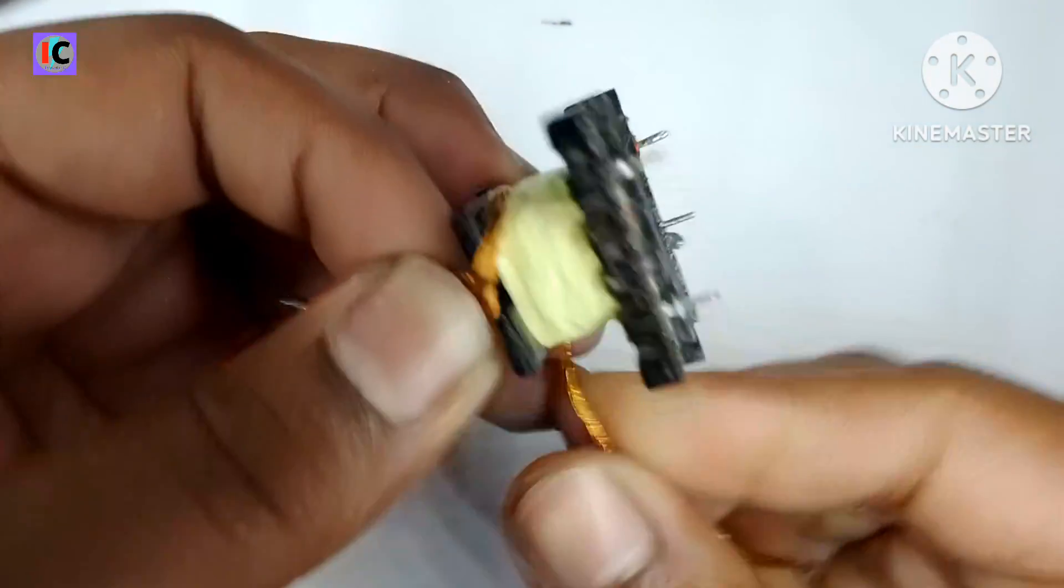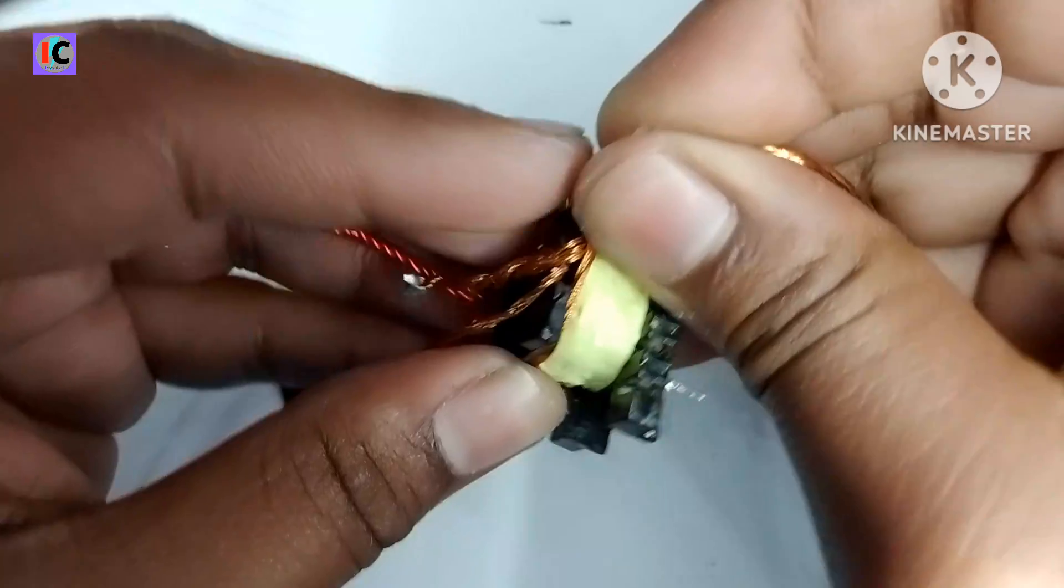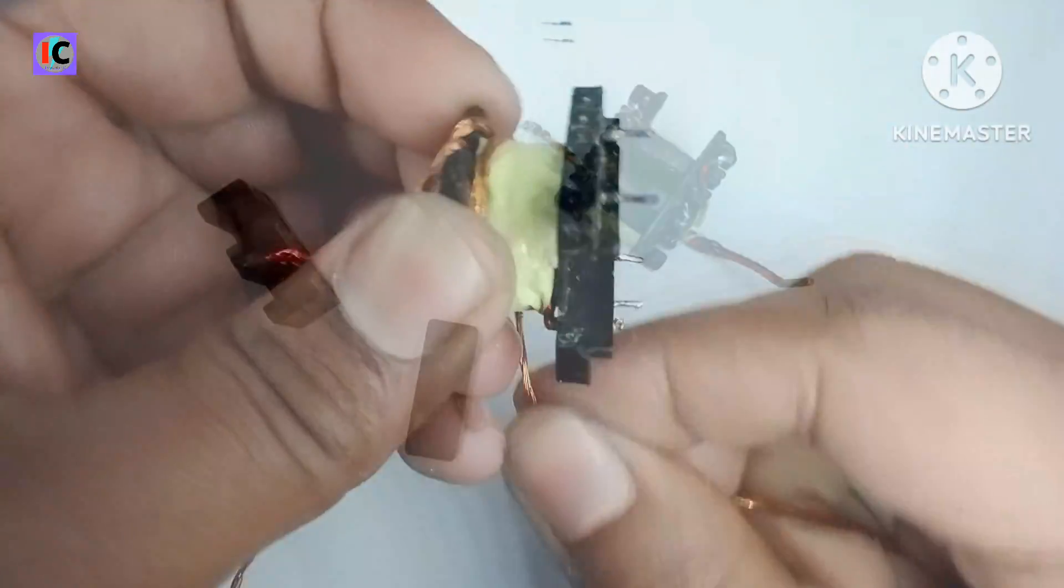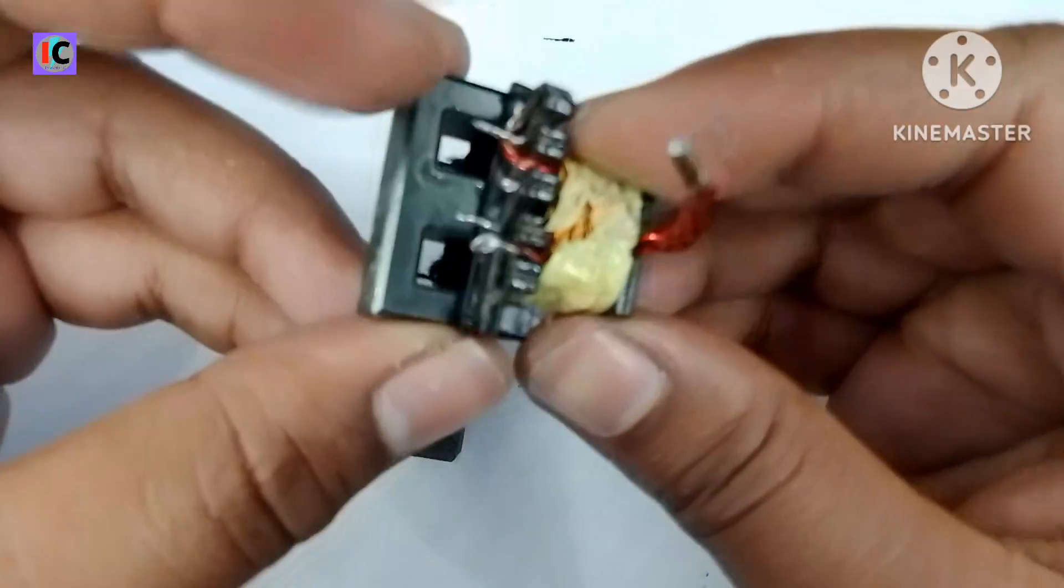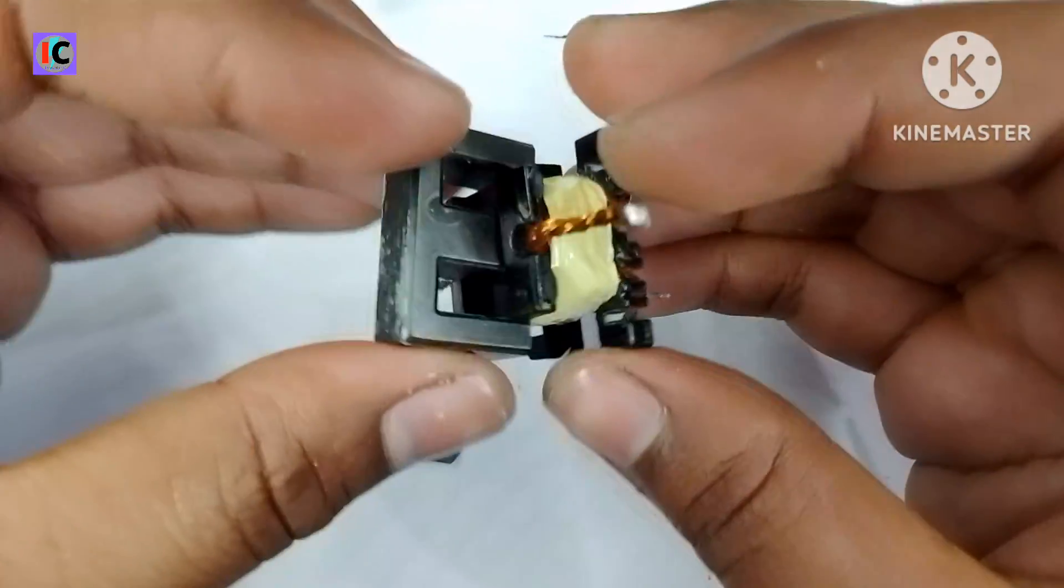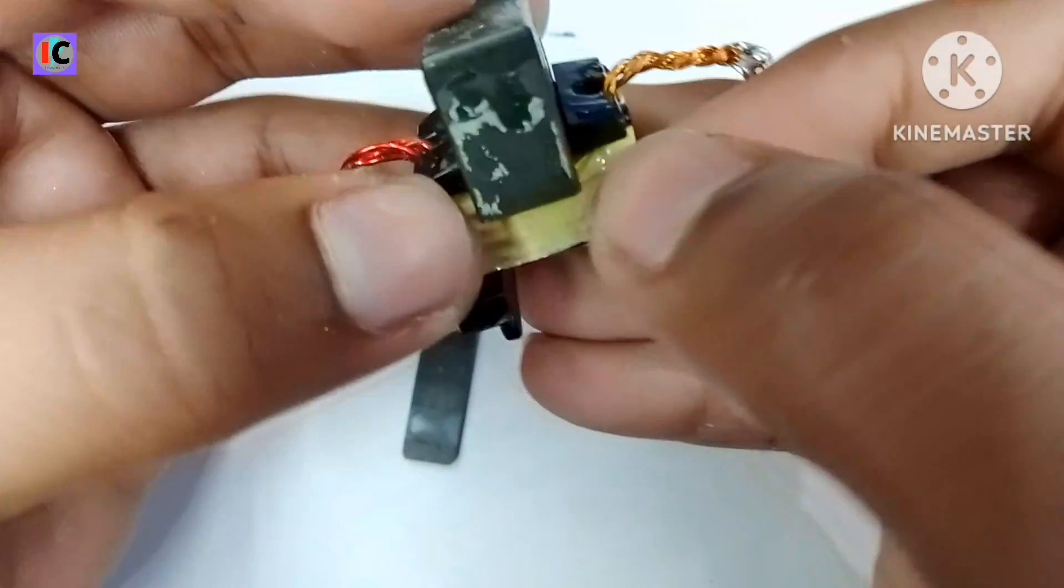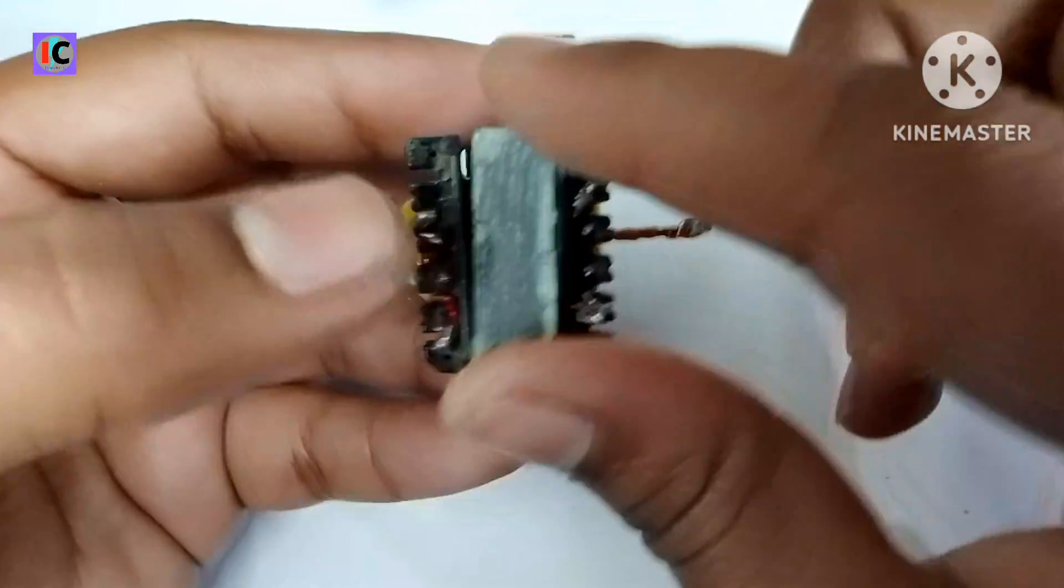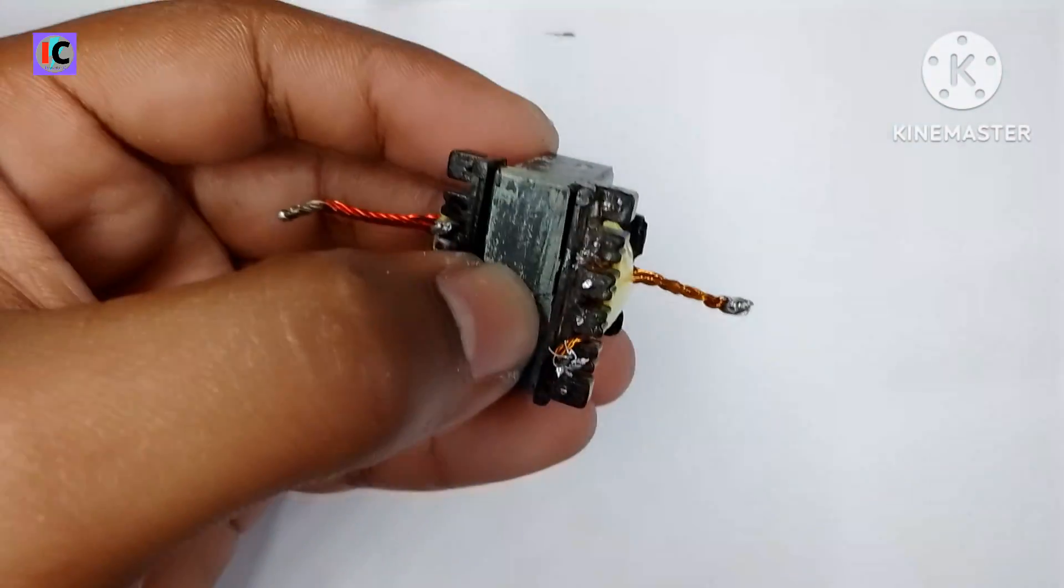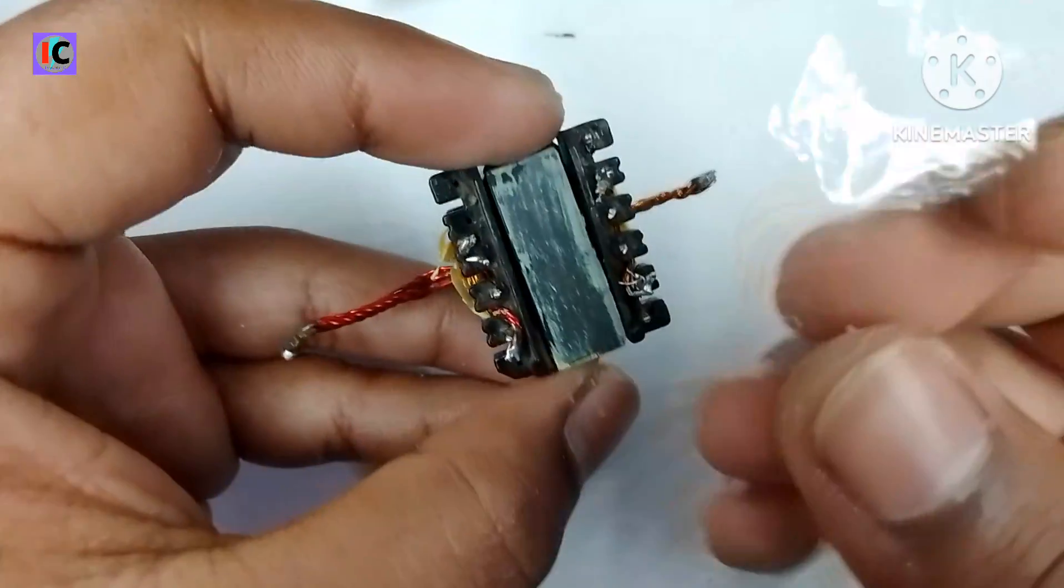So here I'm making 6 turns, and again make a tapping at 0 volt, and then 6 turns. So here our transformer is completed fully and this transformer can be used for making DC-DC converters. I have also used this transformer for making my video on the buck and boost converter using TL494.